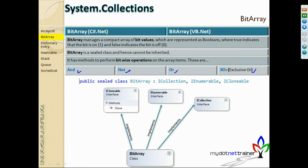Exclusive OR is very useful for short-handed operations on ORs. For example, true OR true gives true, but if any one of the operand values is false, the result is false. So if you have 100 bits in an array and one of them is false, the result is false. Exclusive OR is going to be much faster in those kinds of scenarios.